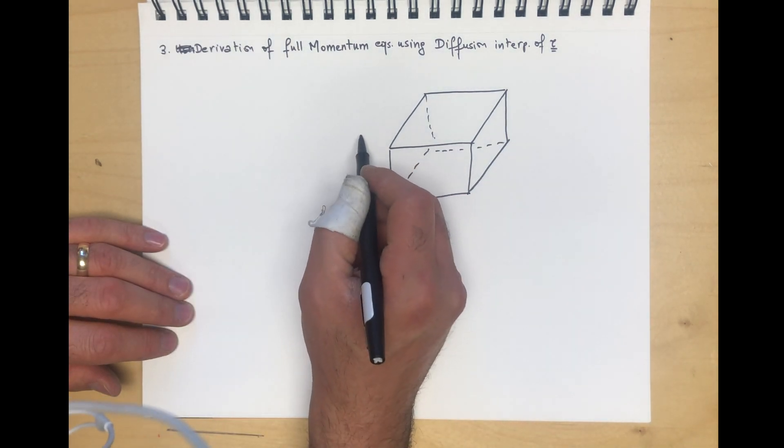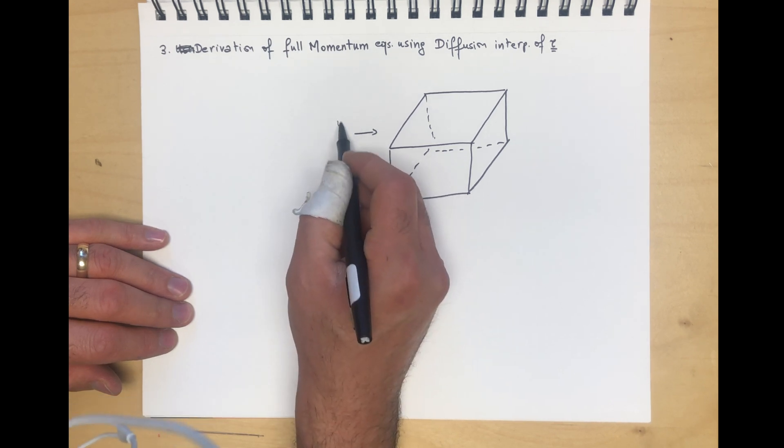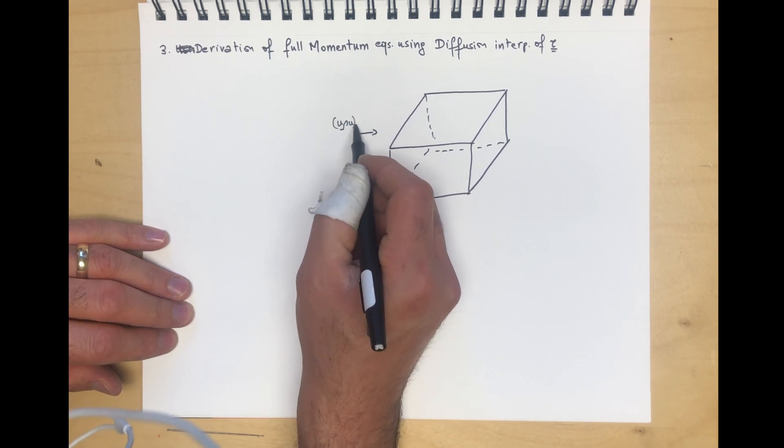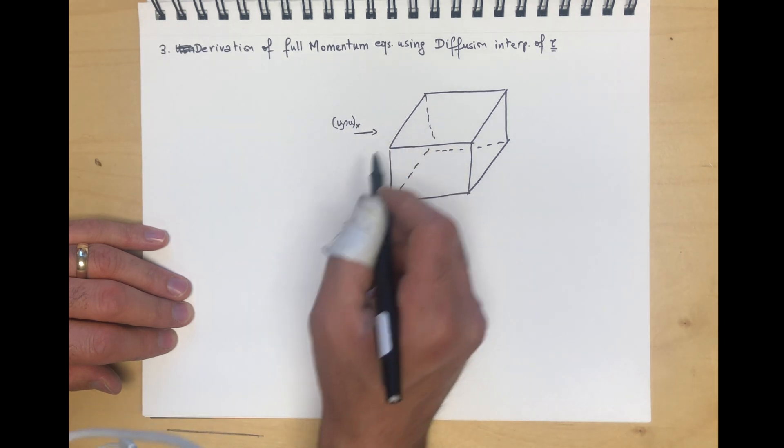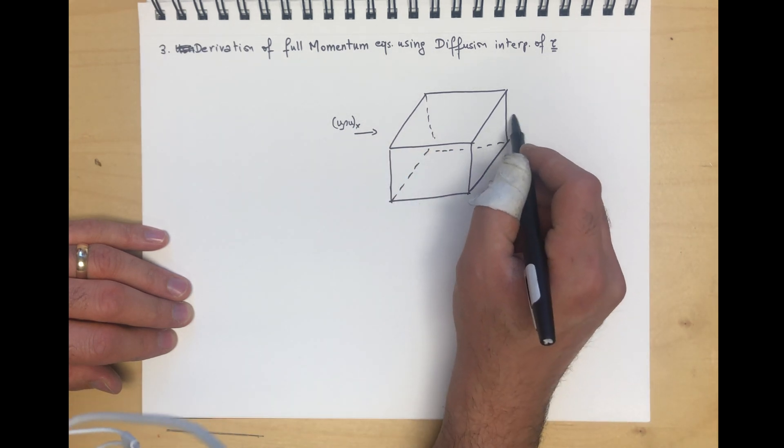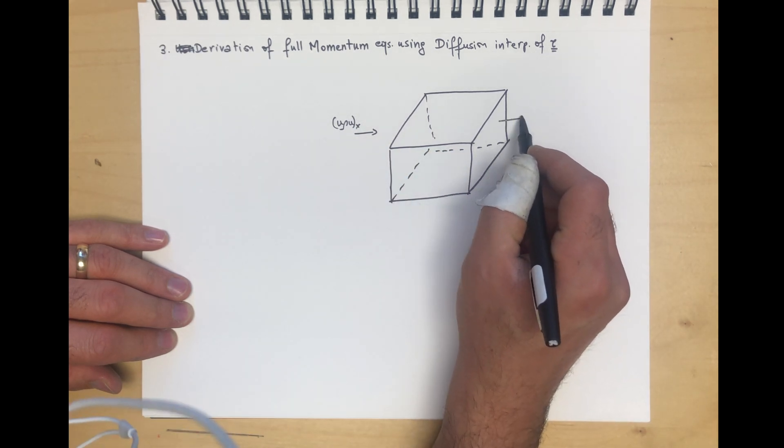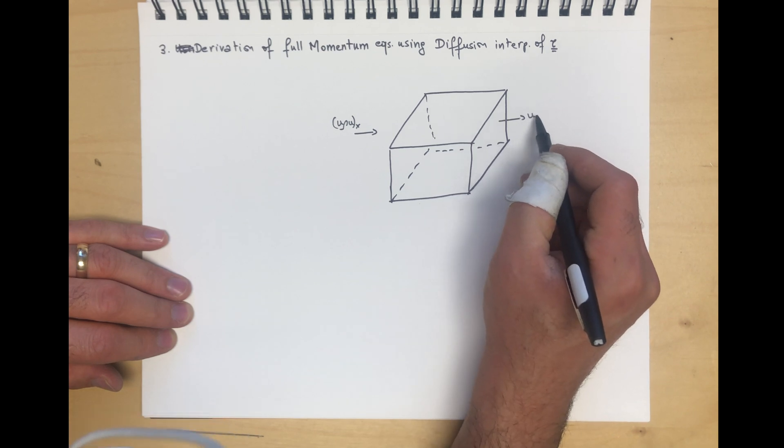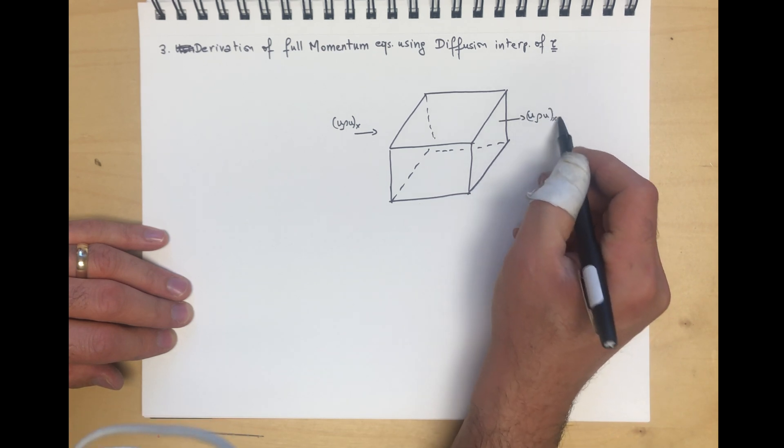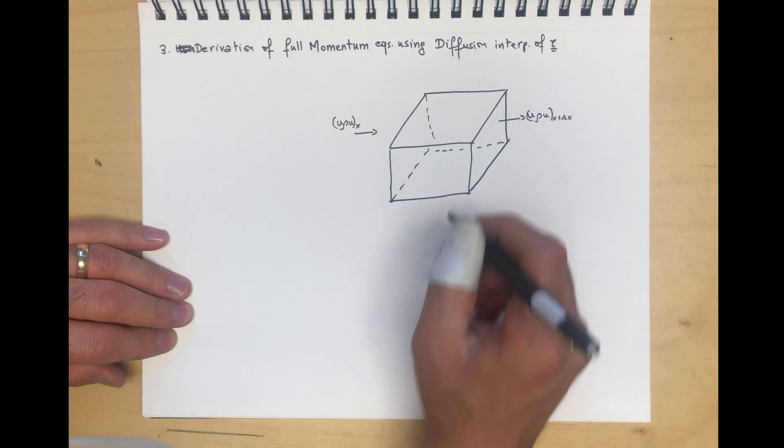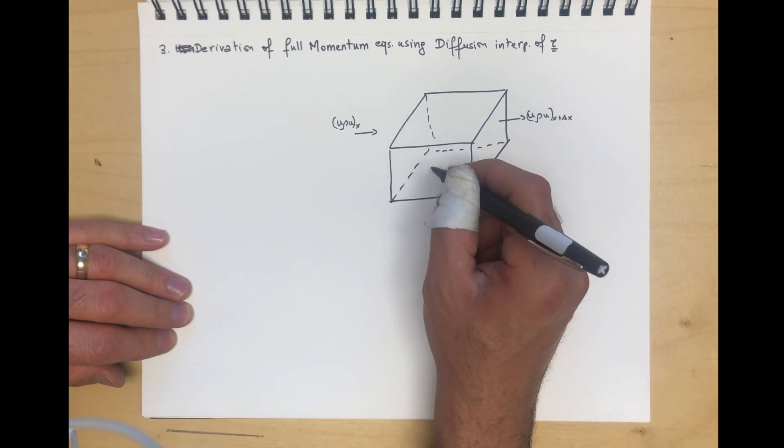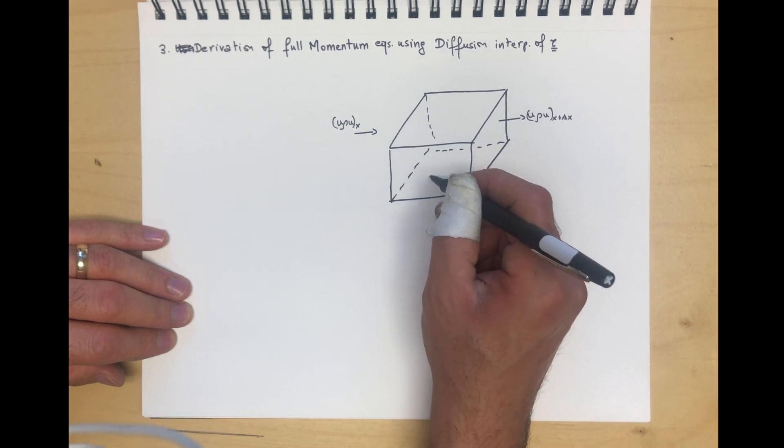We have a convective flux over here, that's u ρ u_x times the area. And over here we have an outgoing advective flux, u ρ u at x plus Δx times the area.